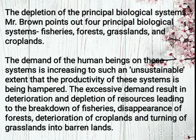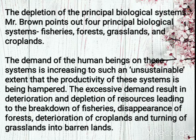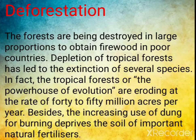According to Mr. Lester Brown, there are four principal biological systems: fisheries, forests, grasslands, and croplands. The demand of human beings on these systems is increasing to such an unsustainable extent that their productivity is being hampered. The excessive demand results in deterioration and depletion — leading to the breakdown of fisheries, disappearance of forests, deterioration of croplands, and turning of grasslands into barren lands.